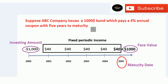From year 2000 to 2005. Suppose that you purchase this bond in year 2000 — you invest $1,000 and purchase the bond by giving $1,000 to ABC company, so there is a negative $1,000. For this video, ignore the $40 coupon payment amounts.